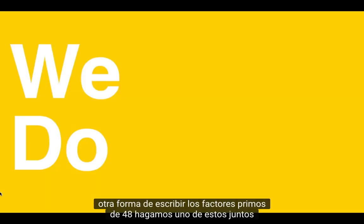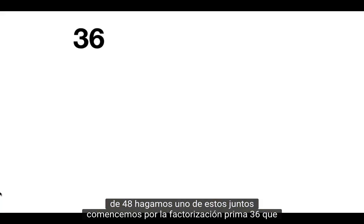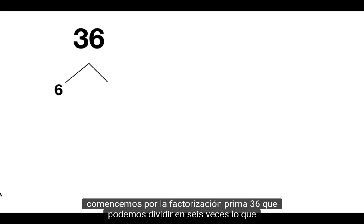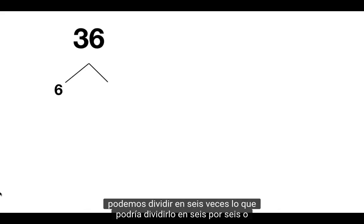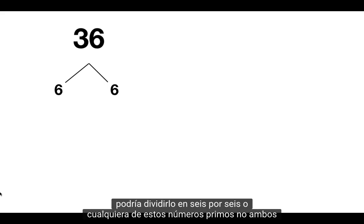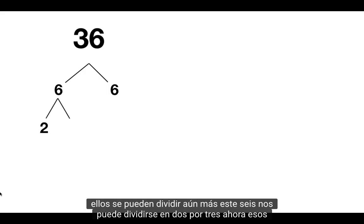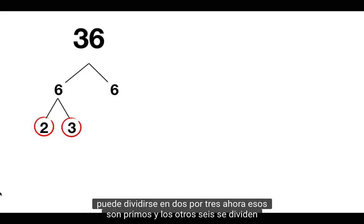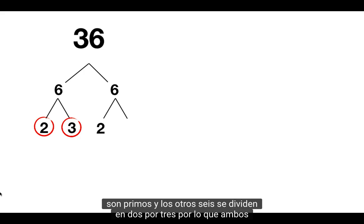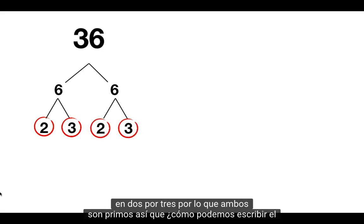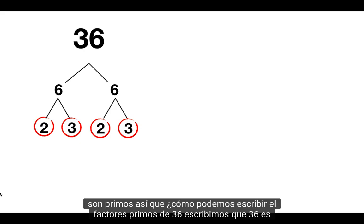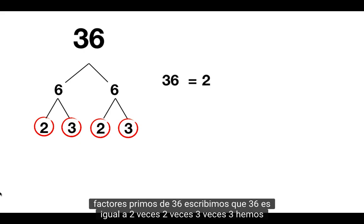Let's do one of these together. Let's start by prime factoring 36, which we can split up into 6 times 6. Are either of these prime numbers? No, both of them can be split up further. This 6 we can split into 2 times 3 — those are prime. And the other 6 gets split into 2 times 3 — so both of those are prime. So how can we write out the prime factors of 36?